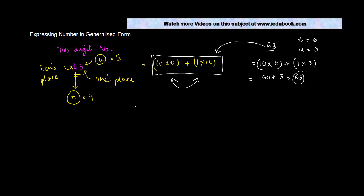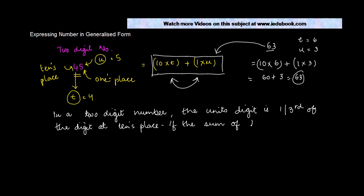Let me tell you with the help of an example. So let's say, for example, you were told that in a two-digit number, the unit's digit is one-third of the digit at tens place. If the sum of the two digits is 12, find the number.